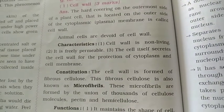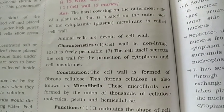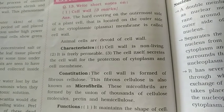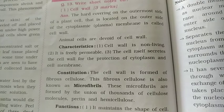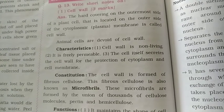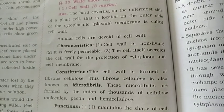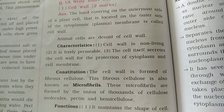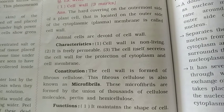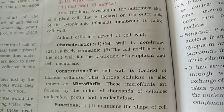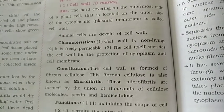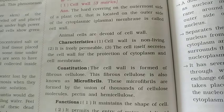Constitution of the cell wall: The cell wall is formed of the fiber cellulose, also known as microfibrils. These microfibrils are formed by the union of thousands of cellulose molecules. Other components include pectins and hemicellulose.